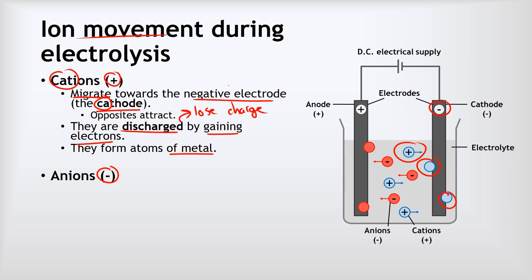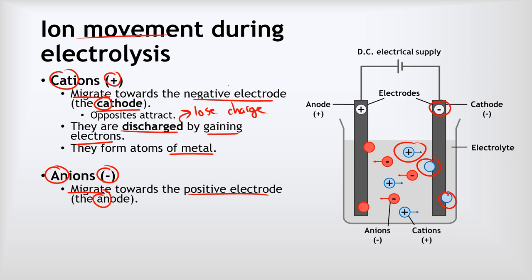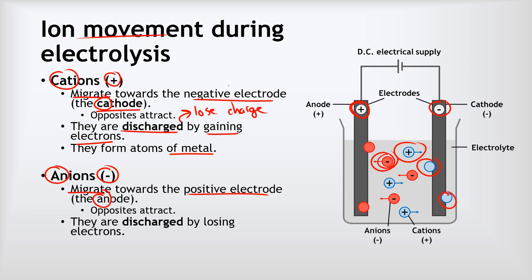What about our anions — our negative ions? The process is the exact opposite. The anions migrate towards the positive electrode, which is the anode. To remember that, put the two AN's together: anions migrate towards the anode. Our negative anions are attracted to the positive anode because opposite charges attract. Once they get to their electrode, the anions will be discharged — that means lose charge — and this time they get discharged by losing electrons. Anions are formed by gaining electrons, so to discharge an anion they need to lose those electrons at the anode, and when they do they form atoms of a non-metal.